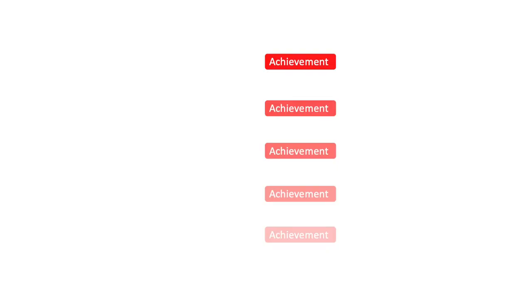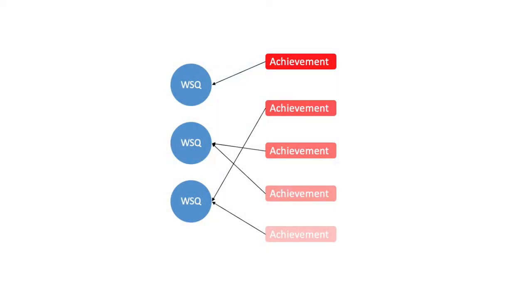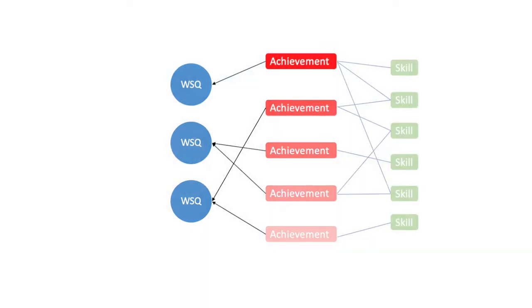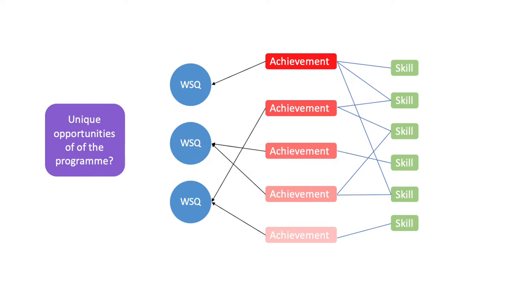Before you start, make a list of achievements you want to mention, then prioritize and rank them based on significance and match them to a white space question. Ideally avoid using one achievement more than once. Next, identify the key skills you want to mention and link these to the achievements you've already ranked. Finally, do background research on the deanery you're applying to. Are there unique courses or opportunities there not available elsewhere? This will make your application much more unique compared to generic statements about why you want to do an AFP.